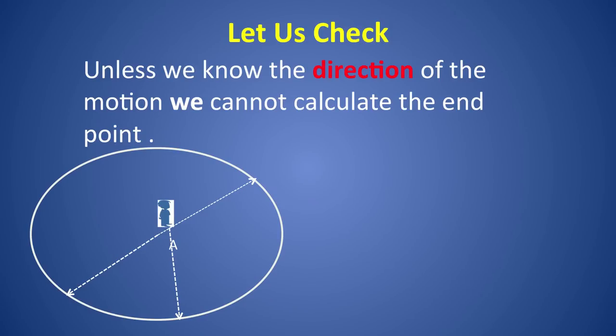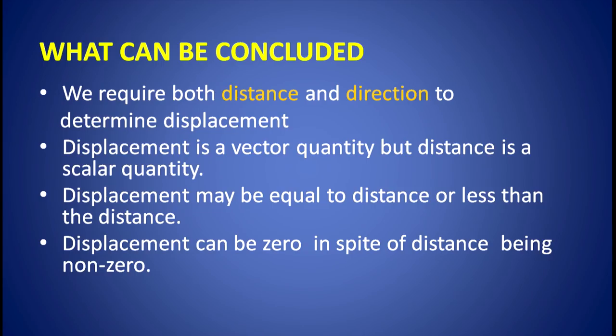Let us take another example. Suppose a person started at point A and walked in a straight line for 1 kilometer. Now can you calculate the end point of his or her journey? No. The person could be anywhere on the circle of 1 kilometer radius. Unless we know the direction of the motion, we cannot calculate the end point. From this example, we can conclude that we require both distance and direction to determine displacement. Displacement is a vector quantity but distance is a scalar quantity. Displacement may be equal to or less than the distance. Displacement can be 0 in spite of distance being non-zero.